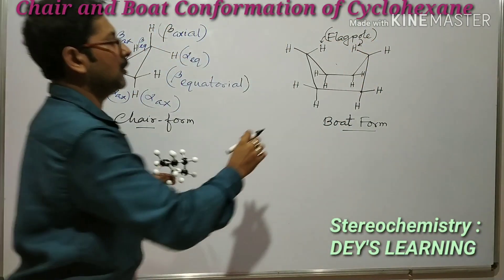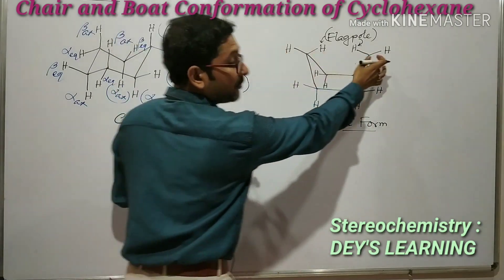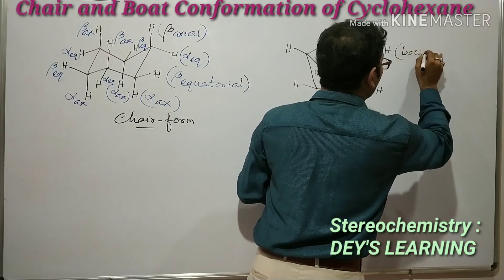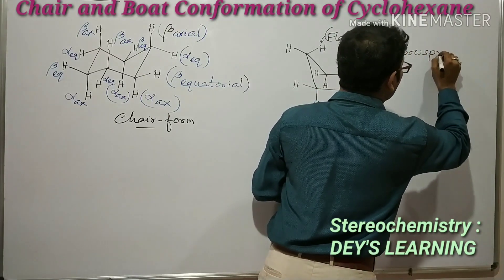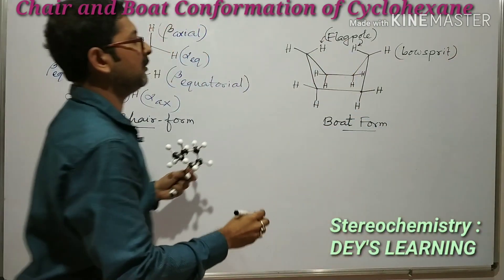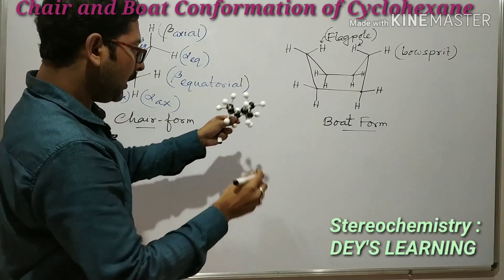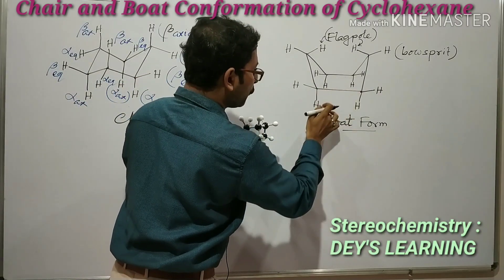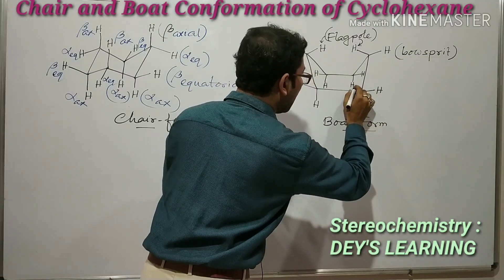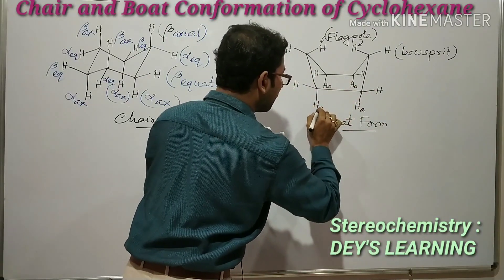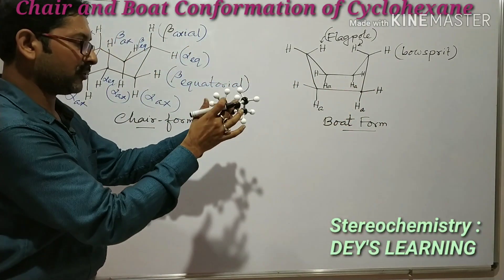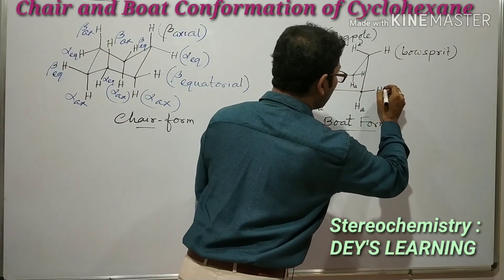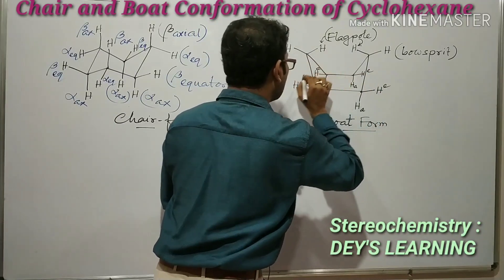These two hydrogens are known as flagpole hydrogens — this one and also this one. The hydrogens present at the other positions — one, two, three, four — these are known as boat axial hydrogens.